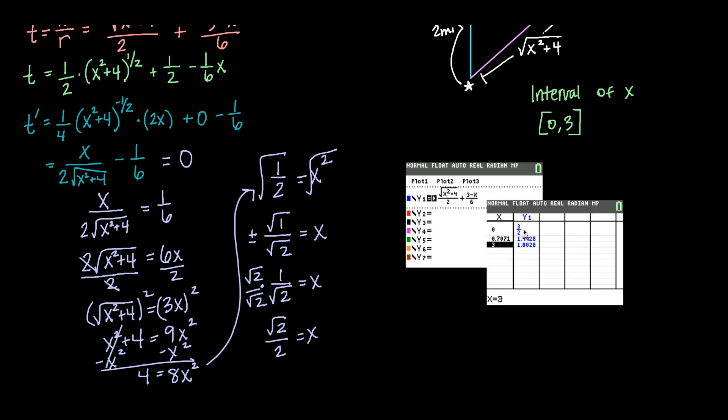So we've got that zero is three over two, or 1.5. Root two over two is approximately 0.707, and we see that gives a time interval of 1.44. And then three, we get 1.802. So remembering here that, again, three over two is about 1.5, we have our minimum occurring at our critical point.